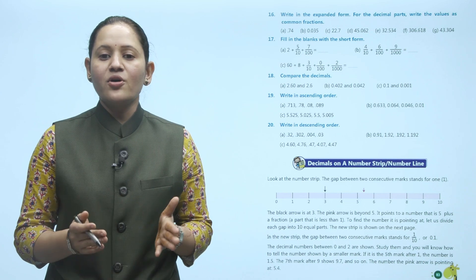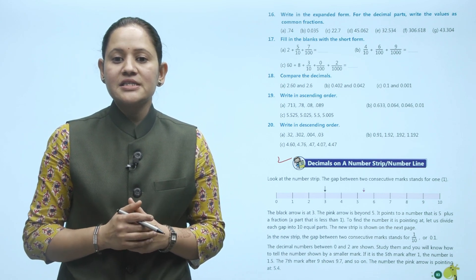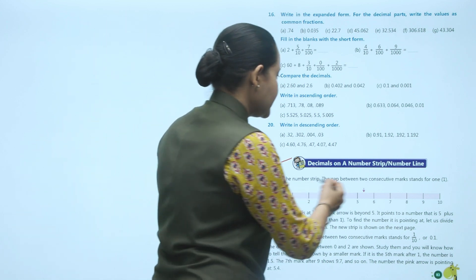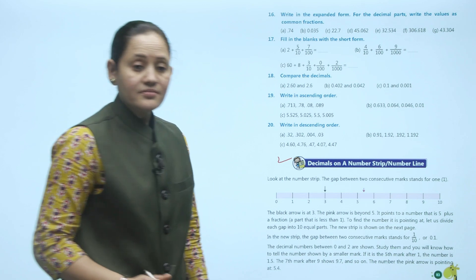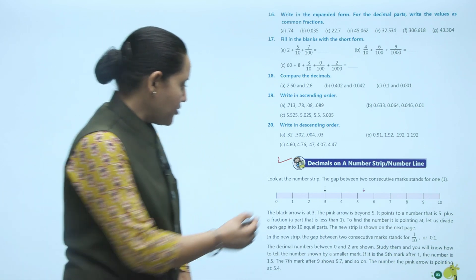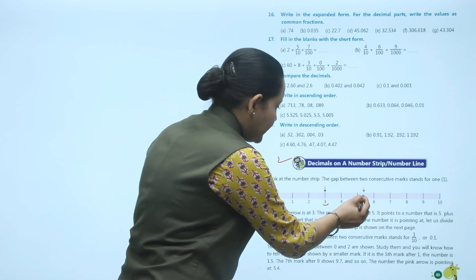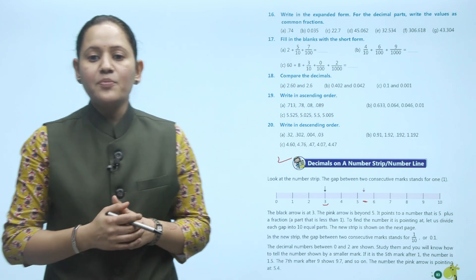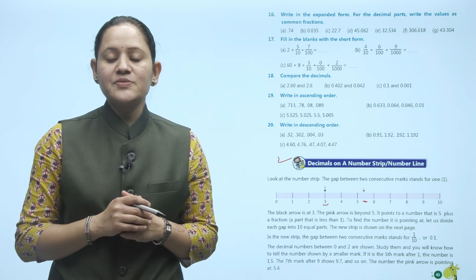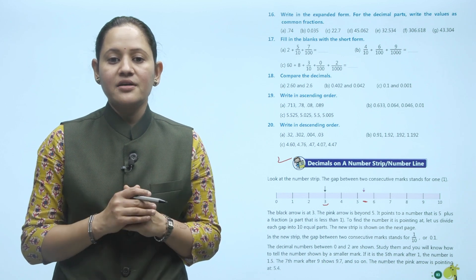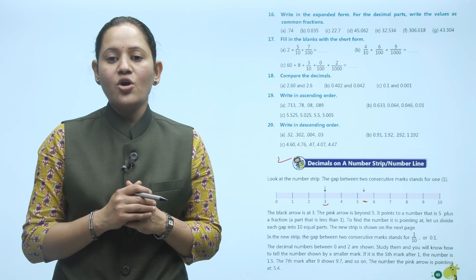Next is decimals on a number strip and number line. On the number strip, the gap between two consecutive marks stands for 1. The black arrow is at 3, and the pink arrow is between 5 and 6. To find exactly where, divide each gap into 10 equal parts. The gap between marks then stands for 1 by 10 or 0.1. The pink arrow is at the 4th mark after 5, so it points to 5.4.